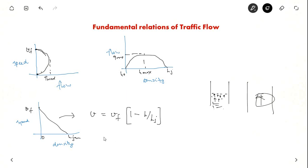And we also have this relation Q is equal to KV. From these two equations you can solve every problem which is there in gate exam. Here we see that maximum density is found at KJ by 2. If you substitute this equation here you will get V is equal to VF by 2. So this is the speed at maximum flow.